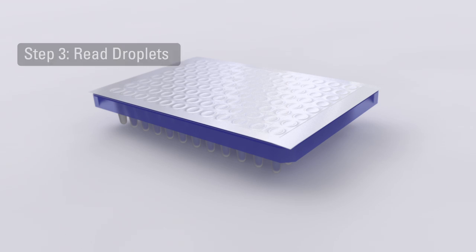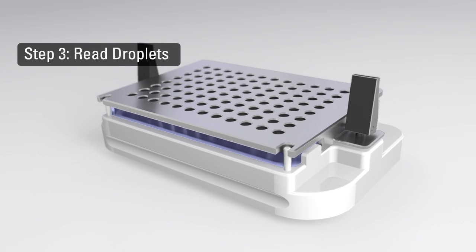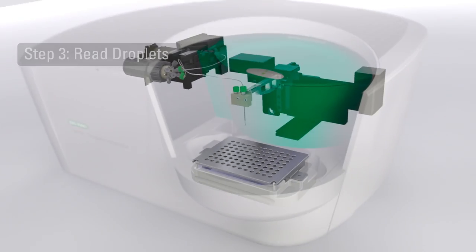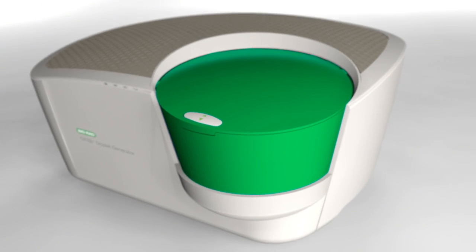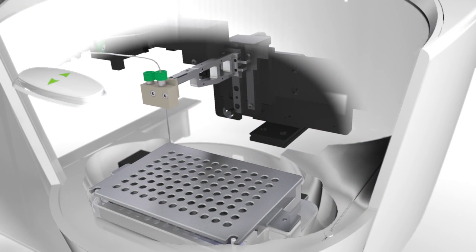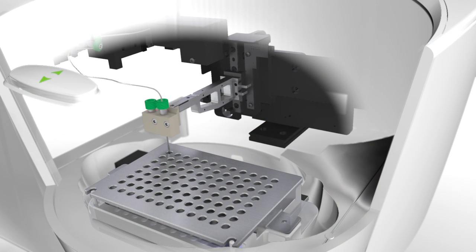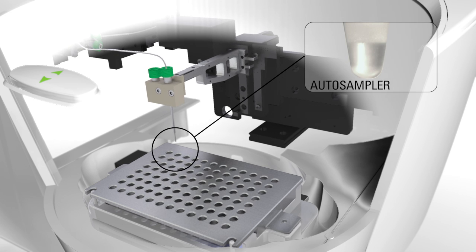When PCR is complete, the plate is loaded onto the QX100 Droplet Reader. The QX100 Droplet Reader is an automated liquid handling device equipped with optimized microfluidics designed for precise, reproducible detection of target DNA sequences, droplet by droplet.